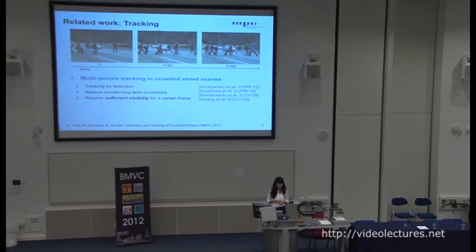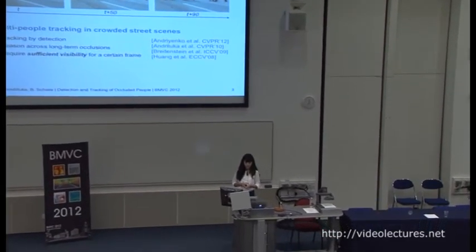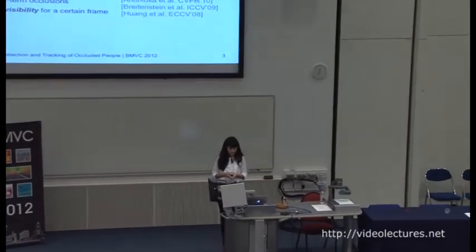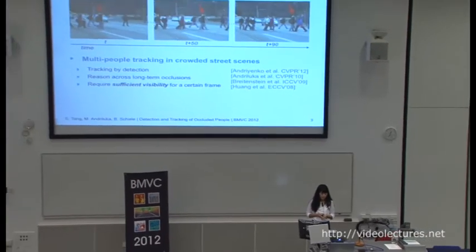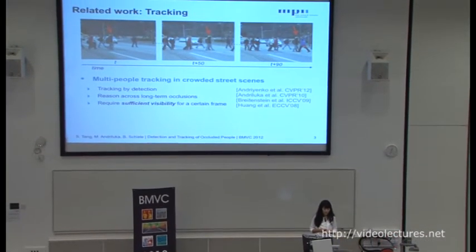Recent approaches about multiple people tracking in crowded street scenes are based on the tracking-by-detection approach. They employ the pedestrian detector on a single image, even though they don't have detections when people are occluded. What they did is include some elaborate strategies to link across the occlusion event. This strategy requires sufficient visibility for a certain number of frames before and after the occlusion, and this doesn't work for people who are under occlusion for the entire sequence.